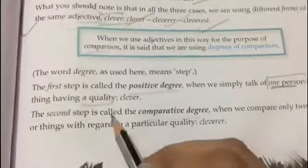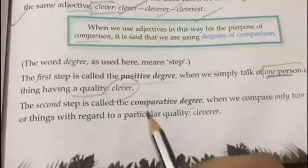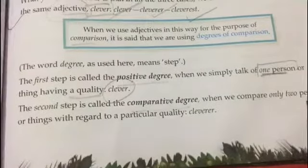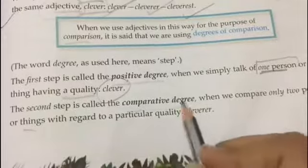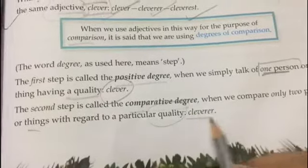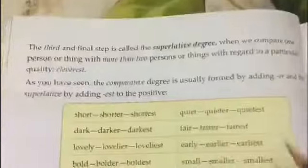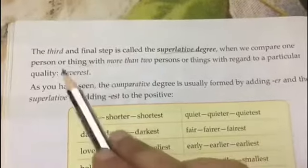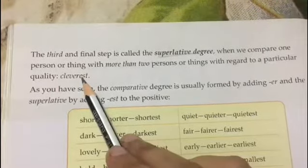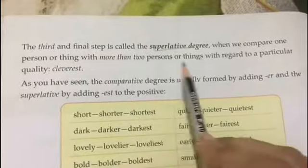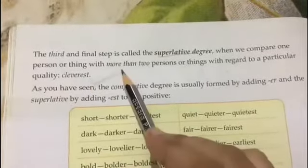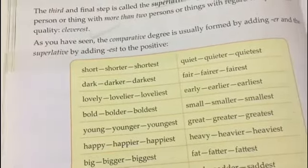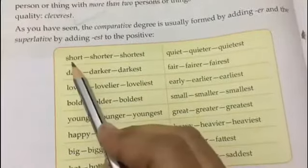To recap: in the positive degree we talk about one person having a quality. In the comparative degree we compare two persons or things with regard to a particular quality — for example, 'cleverer.' In the superlative degree we compare more than two persons or things — for example, 'cleverest.'